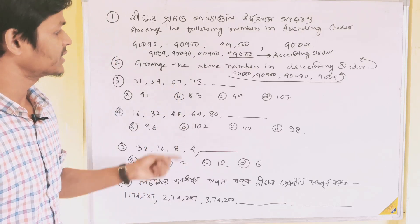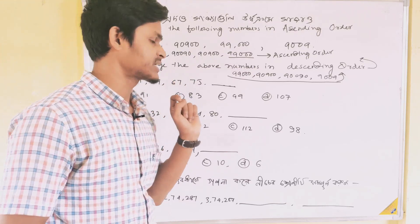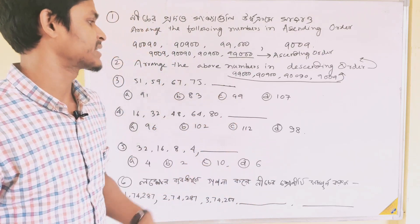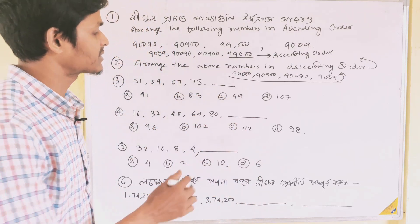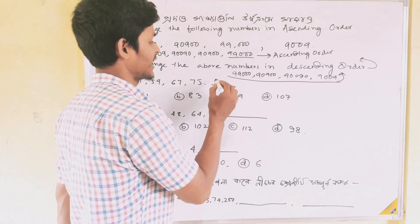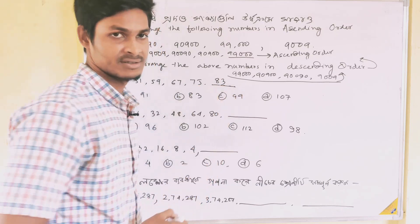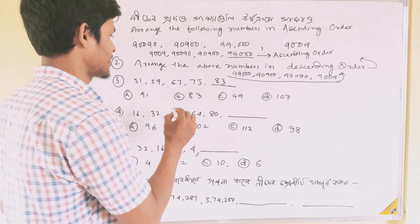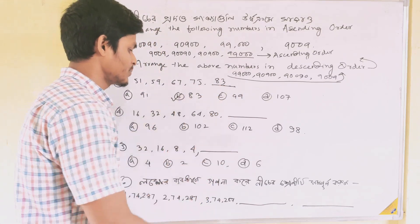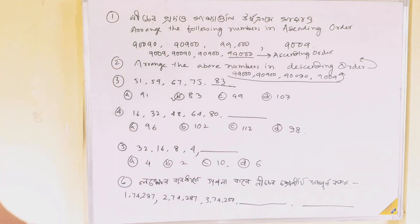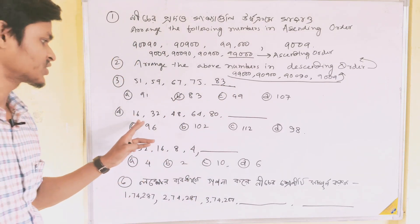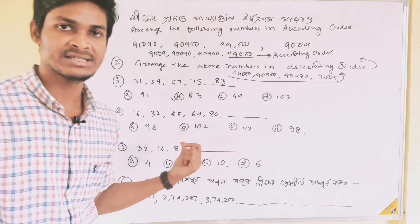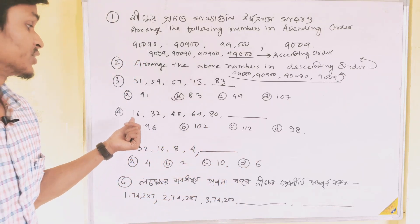Then, if you add 8 to 67, you get 75, and if you add 75 plus 8, you get 83. So your answer is option B. Next, another skip counting: 16, 32, 48, 64, 80. These are the multiples of 16.